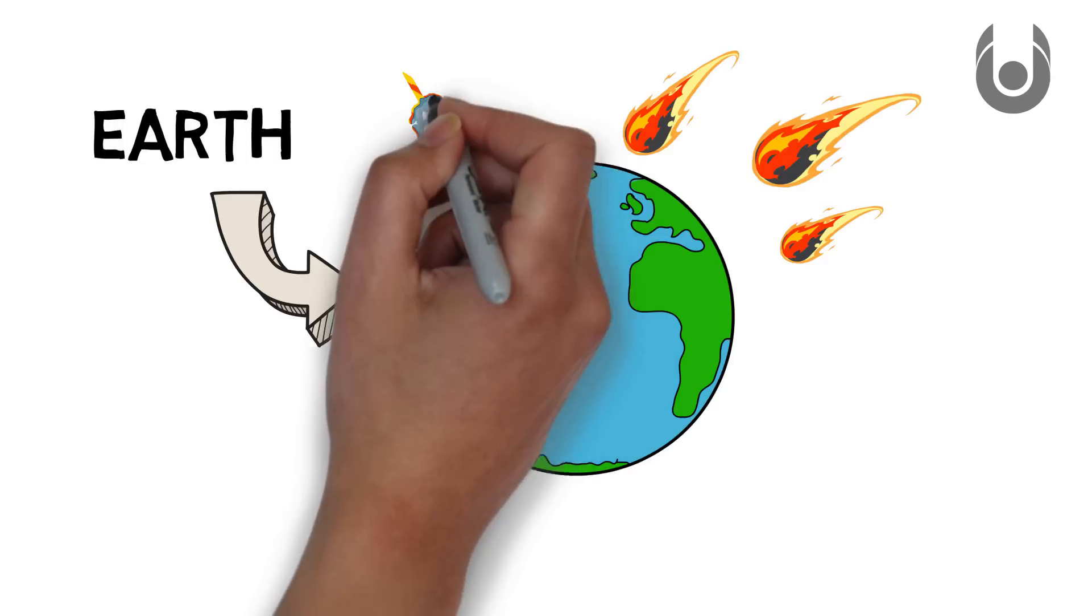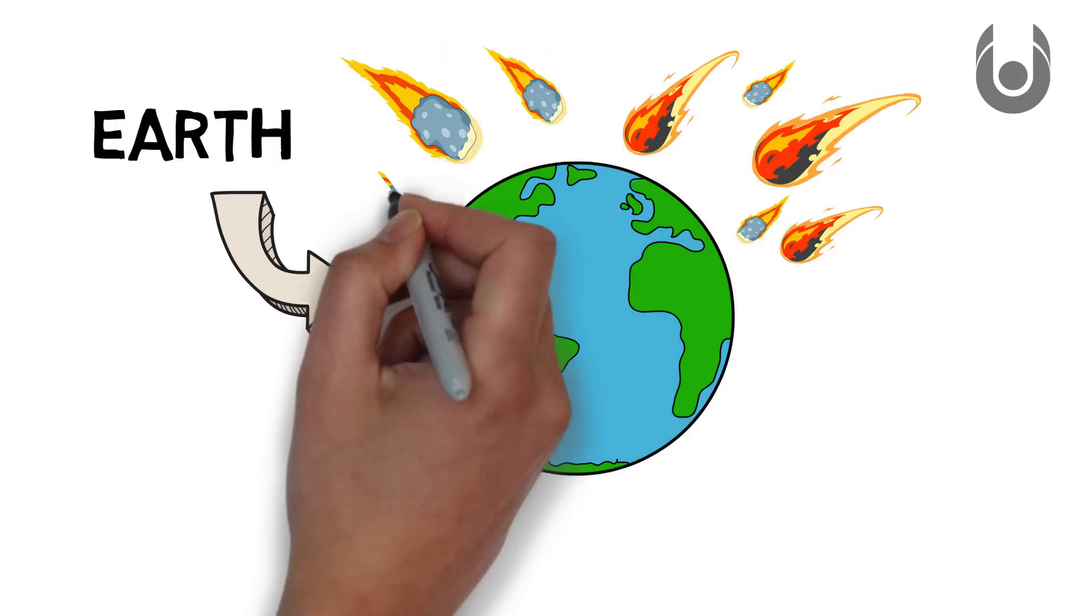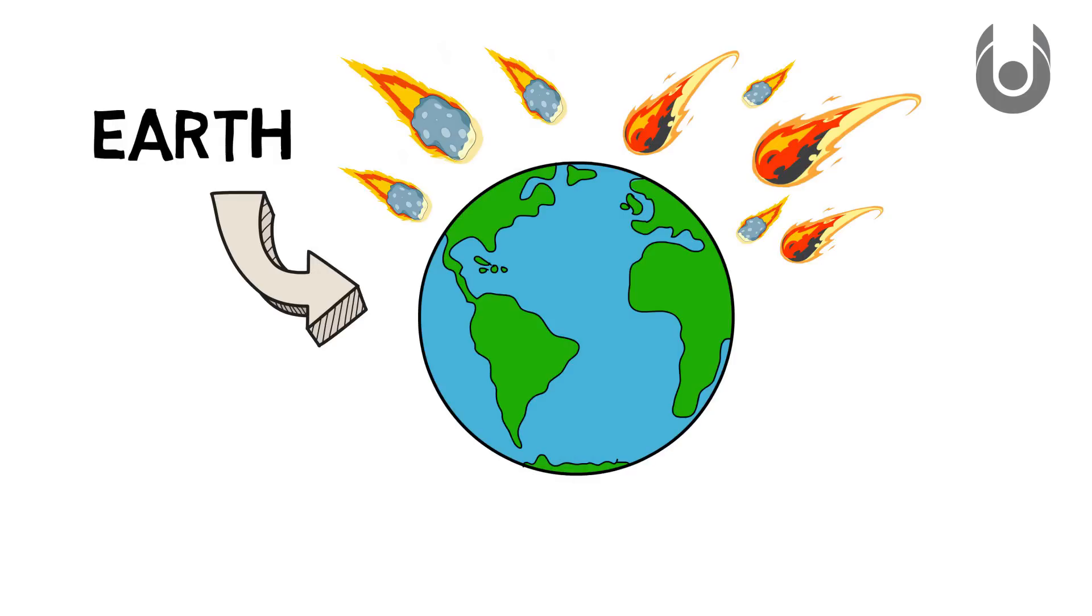This wasn't some trivial meteor shower, however. It was a continual barrage of thousands of objects per day, and not just rocks, but cometary bodies. So we got a lot of water and other useful elements like nitrogen.